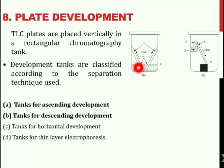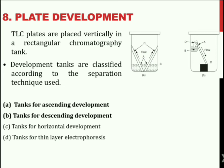Plate Development: TLC plates are placed vertically in a rectangular chromatography tank. Development tanks are classified according to the separation technique used; two universally used methods are tanks for ascending development and tanks for descending development. A drop of sample is placed near one edge of the plate and its position is marked on the backside with a pencil. The sample application point is air dried and the plate is placed in a closed container saturated with vapours of the developing solvent. After the solvent has traversed one half of the plate, the plate is removed and dried.